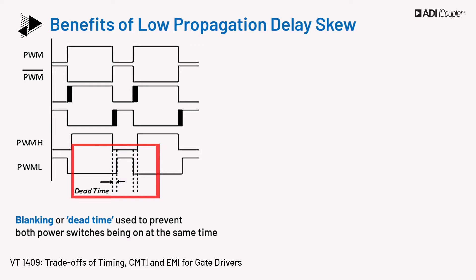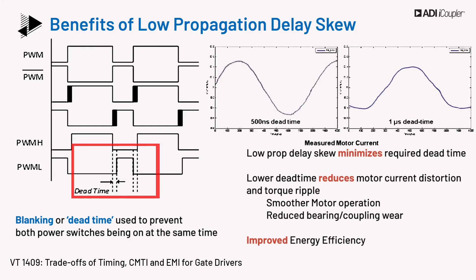To prevent both power switches from being on at the same time, blanking or dead time must be inserted into the pulse width modulator, PWM. The goal is to have no shoot-through and the shortest dead time as possible. Although it's tempting to set dead time based on min-max propagation delay across all conditions, this may leave some performance unused. Hence, we need to consider the propagation delay skew number, which then determines the required dead time.